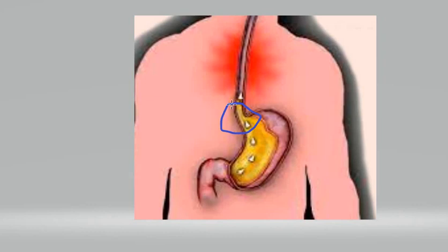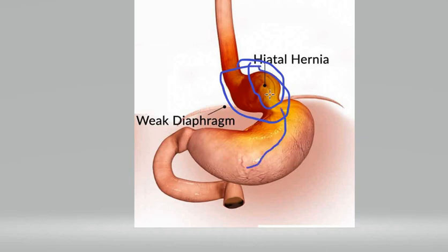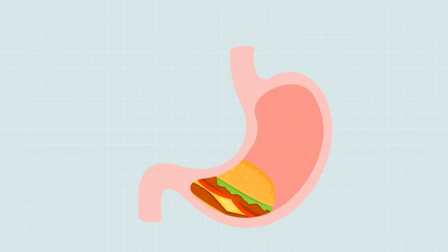Weak muscles do not close properly and allow gastric content to move upward towards the esophageal pipe. The next factor which causes GERD is hiatal hernia, in which the stomach bulges up like this, and as a result, stomach content can move upward towards the esophageal pipe.